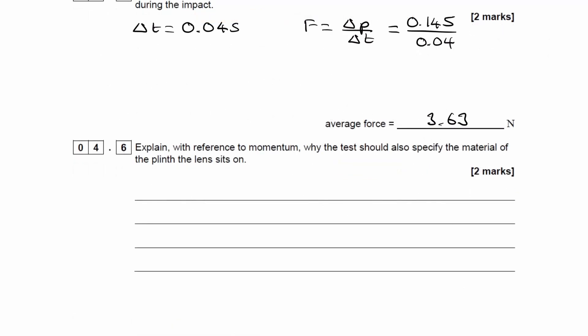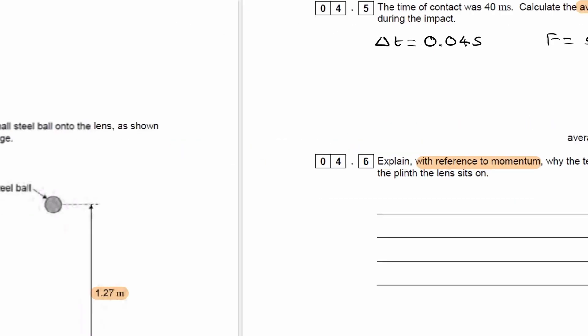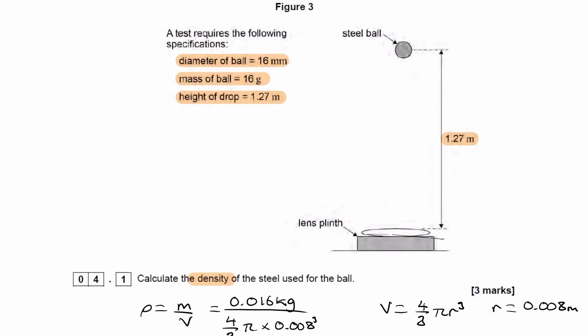For 4.6, explain with reference to momentum why the test should also specify the material of the plinth the lens sits on. So the plinth is this thing here. That's the lens plinth. So the lens sits on top of that. So the question is asking, why do we need to specify what material that is? So one reason is that if, for instance, this material were not stiff, it were not rigid, then that would increase the time of collision. As you can imagine, if this were like, let's just pick an extreme scenario, let's say this is a pillow.